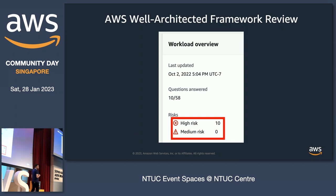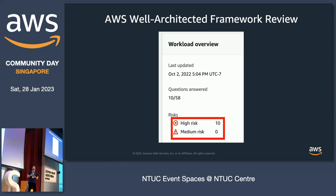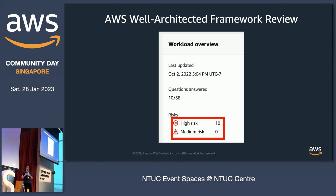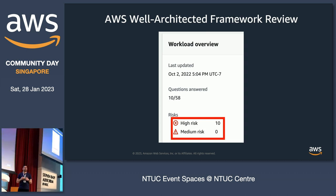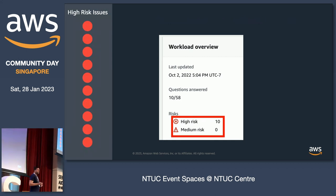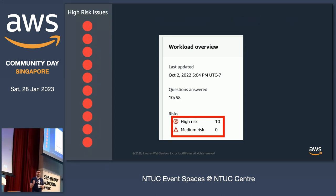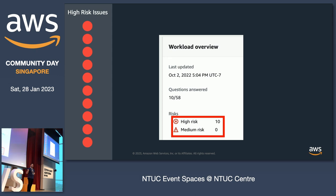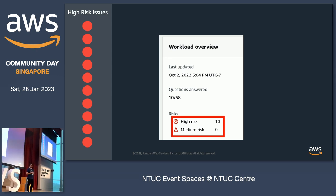Once you run the AWS Well-Architected assessment using the tool, this is exactly what you get. I ran an assessment and got 10 high risks because I applied nothing of the best practices at this stage for cost optimization. We need to address these 10 high risks. You might also get medium risks, which are best to address. For the sake of time, we'll focus on five high risks. For every high risk we address, the red circle will turn from red to green.